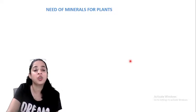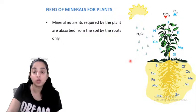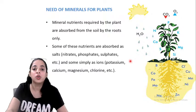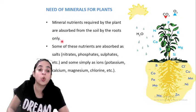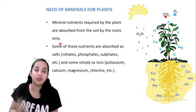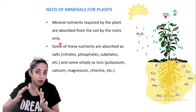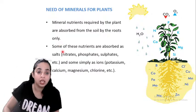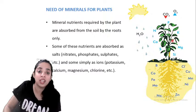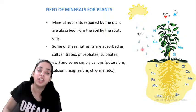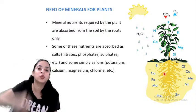Now let us study the need of minerals for plants. The mineral nutrients required by the plant are absorbed from the soil by roots only. Some of these nutrients are absorbed as salts — nitrates, phosphates, sulfates, etc. — and some are present simply as ions like potassium, iron, calcium, magnesium, chlorine — or as potassium nitrate, potassium phosphate, potassium sulfate. So minerals are present in two forms: as salts and as simple ions.